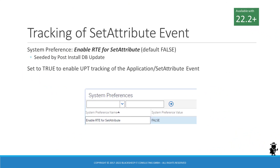When you update or upgrade to Siebel CRM 22.2 or higher, a new system preference is added into your database. This new system preference is named Enable RTE for Set Attribute. When set to false, which is the default value, the set attribute runtime event will not be tracked by the usage pattern service. If the system preference is set to true and if the set attribute event is registered with the application and an action set calling the usage pattern service, UPT data will track the event. It can then be analyzed as part of the entire usage pattern data set captured in the UPT CSV files.